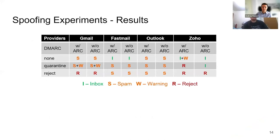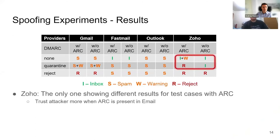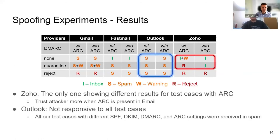To our surprise, we found interesting results caused by different ARC configurations, specifically for Zoho. While others did not behave differently when forged ARC is added, Zoho is the only service provider we found with a significant difference when any ARC set is presented in the email message. The result shows that Zoho treats all emails with an ARC set presented as benign emails, unless DMARC has explicitly rejected it. We believe that is because Zoho misinterpreted what ARC's pass means — a chain not tampered doesn't mean it can be trusted. Zoho aside, we also find that Outlook is not responsive to all our configurations, and not even dropping spoofed emails when DMARC is set to reject, which is a bit worrying. Gmail is the best one that meets all our expectations.